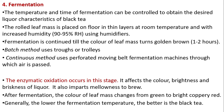Fermentation: the temperature and time of fermentation can be controlled to obtain the desired liquor characteristics of black tea. The rolled leaf mass is placed on the floor in thin layers at room temperature with 90–95% relative humidity using humidifiers. Fermentation continues until the color of the leaf mass turns golden brown, taking one to two hours. Batch method uses troughs or trolleys; continuous method uses perforated moving belt fermentation machines. The enzymatic oxidation in this stage affects the color and brightness of the liquor and imparts mellowness to the brew.